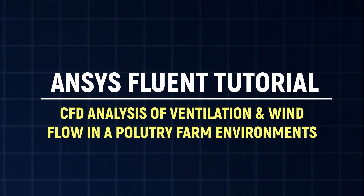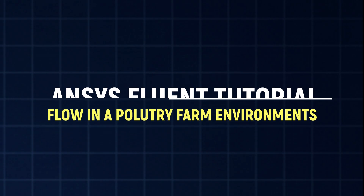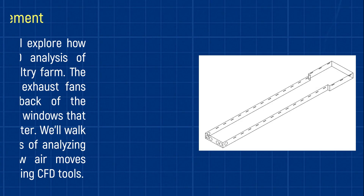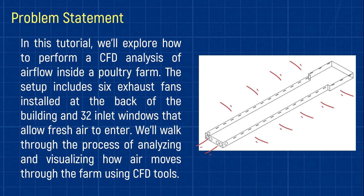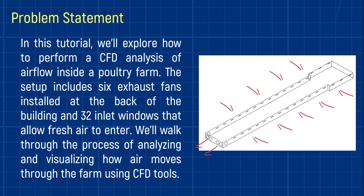Hello friends, welcome to Ancest Tutor. In this tutorial we are going to analyze ventilation and wind flow in a poultry farm environment. This is the poultry farm. It is having 32 number of inlet windows and 6 number of exhaust fans attached to it. We are going to see how the wind travels through this poultry farm.